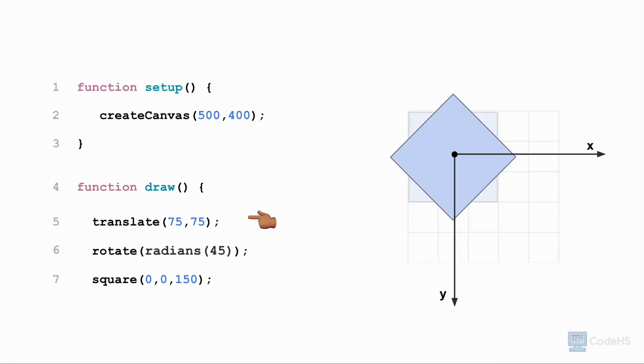To rotate around the center of a shape, the origin should be shifted to be located at the center of the shape. The center of the square is located at 75,75. Using the translate function, we can shift the origin to the center of the square, and then rotate the square.